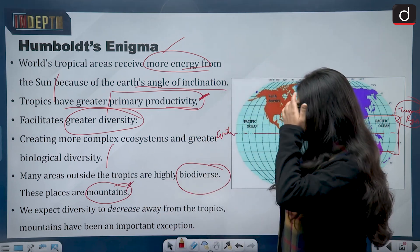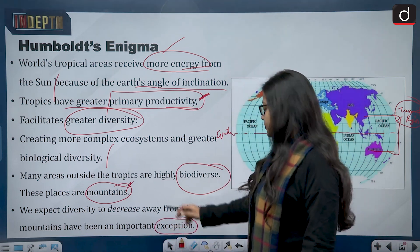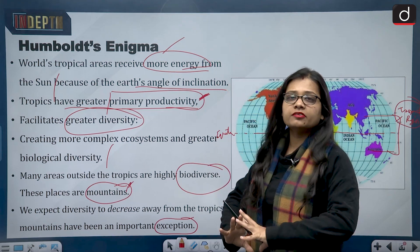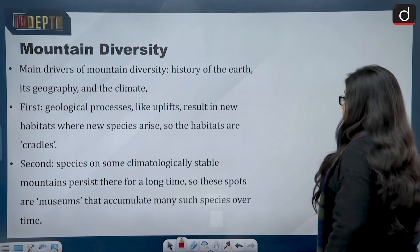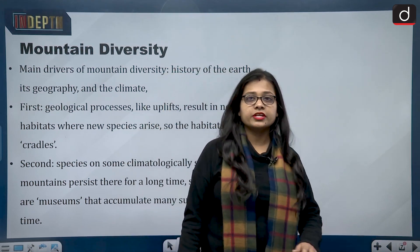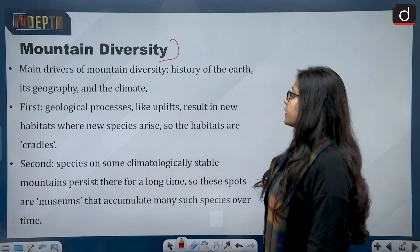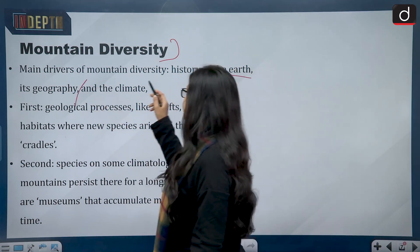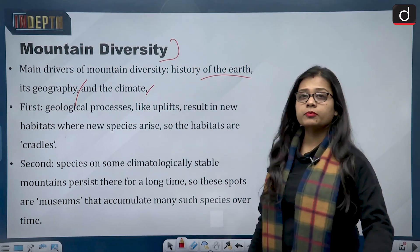We expect diversity to decrease away from the tropics, but mountains have been an important exception. As a region becomes colder, biodiversity generally decreases. The main drivers for mountain diversity are the history of the Earth, its geography, and the climate.